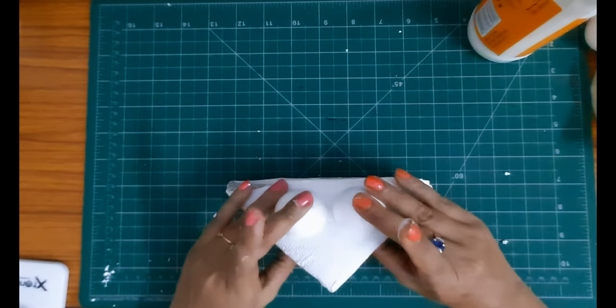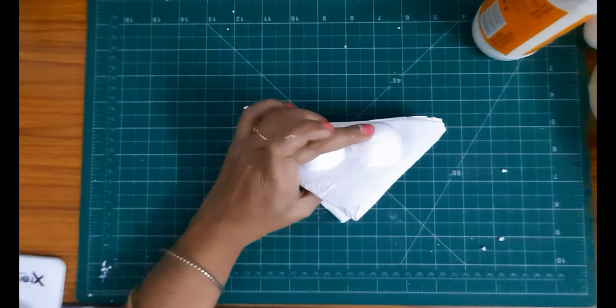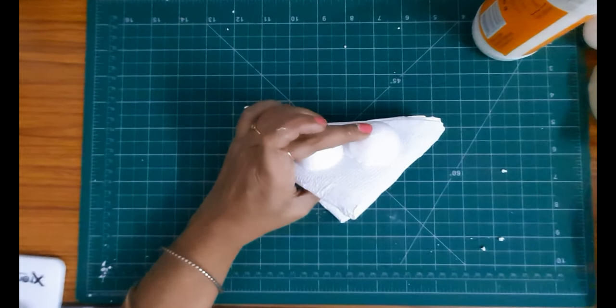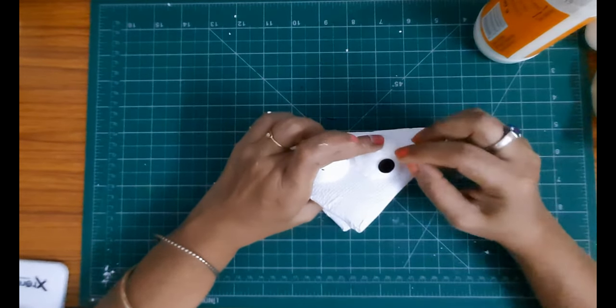So this could take some time to dry. Keep the pressure for some time, then mark two points where the pupils would come. Now I have stickers here which I am going to use.